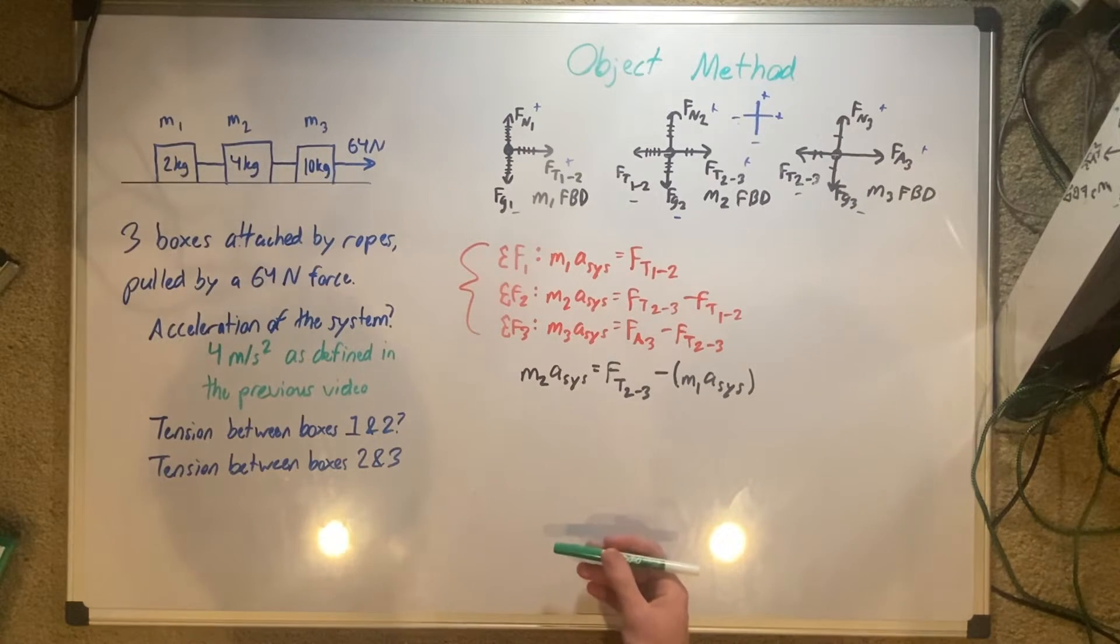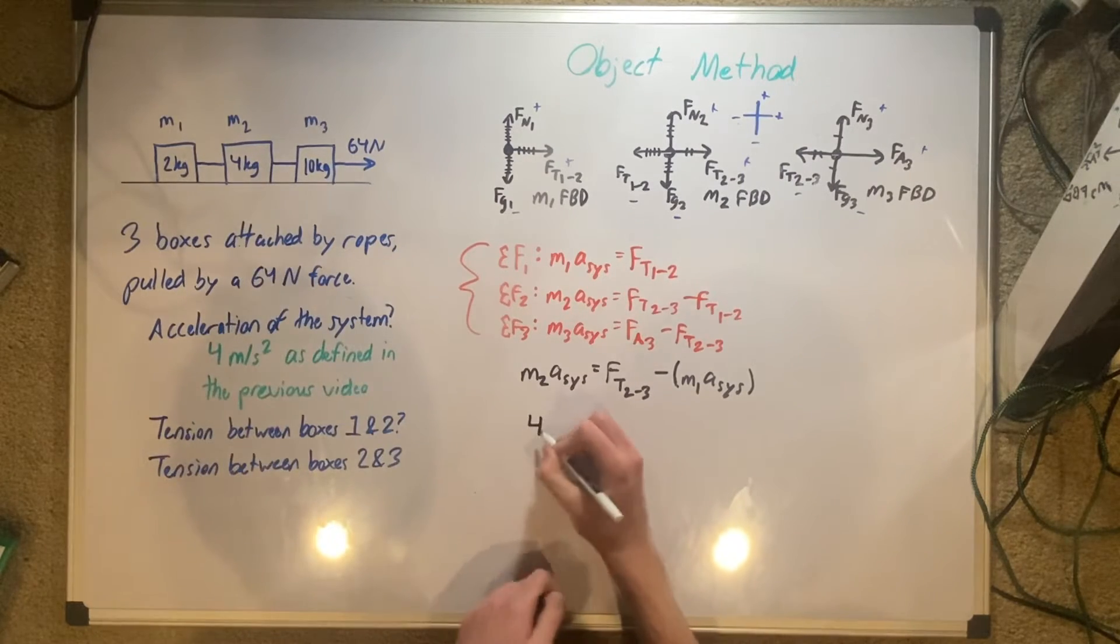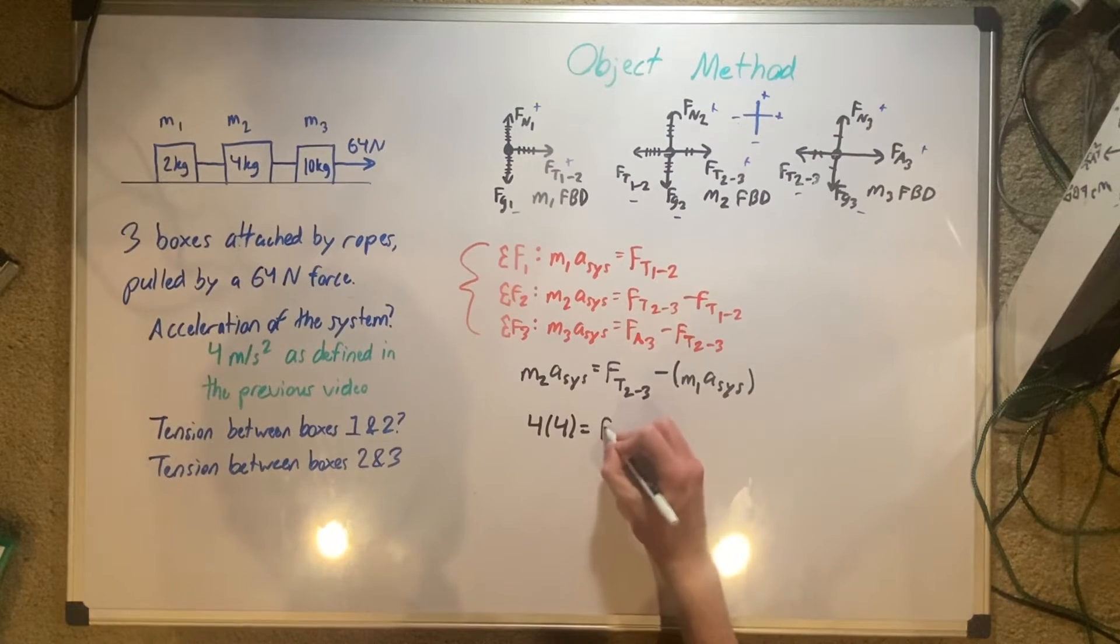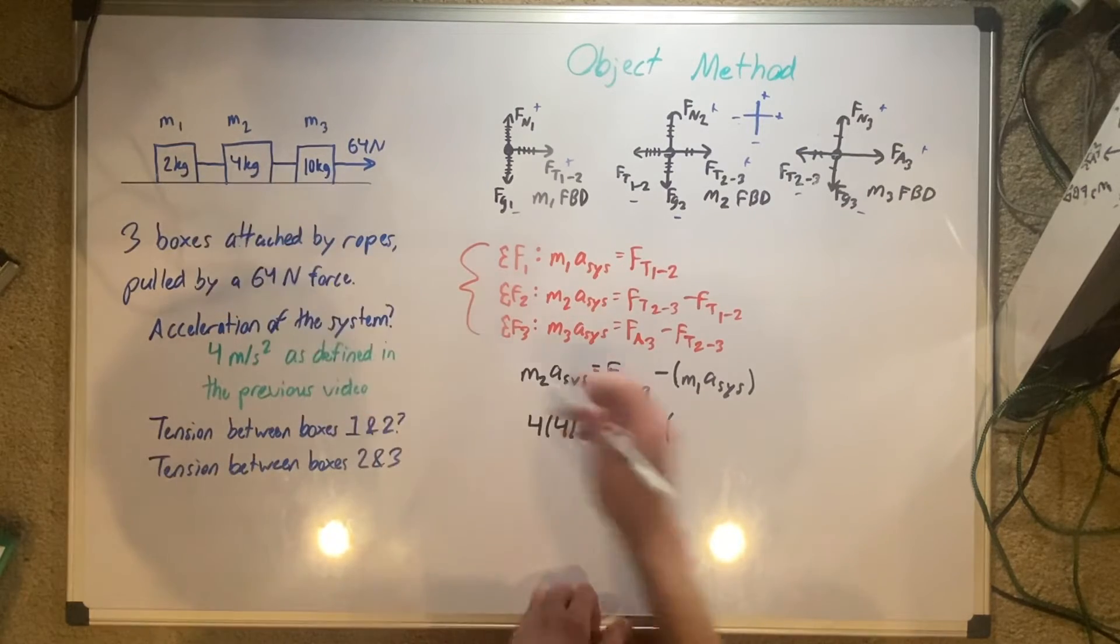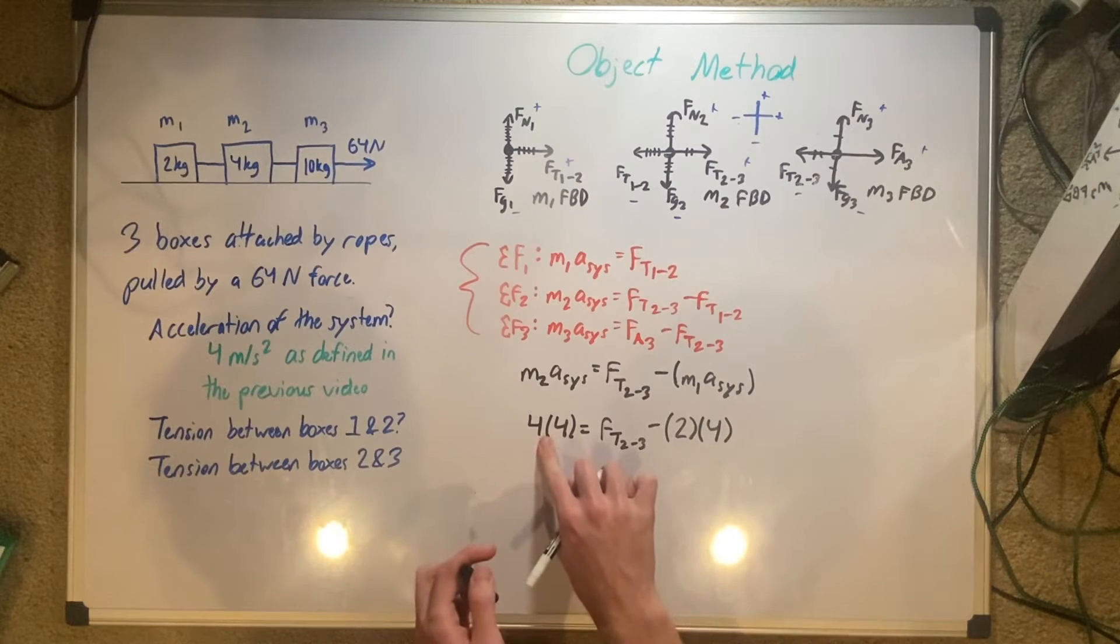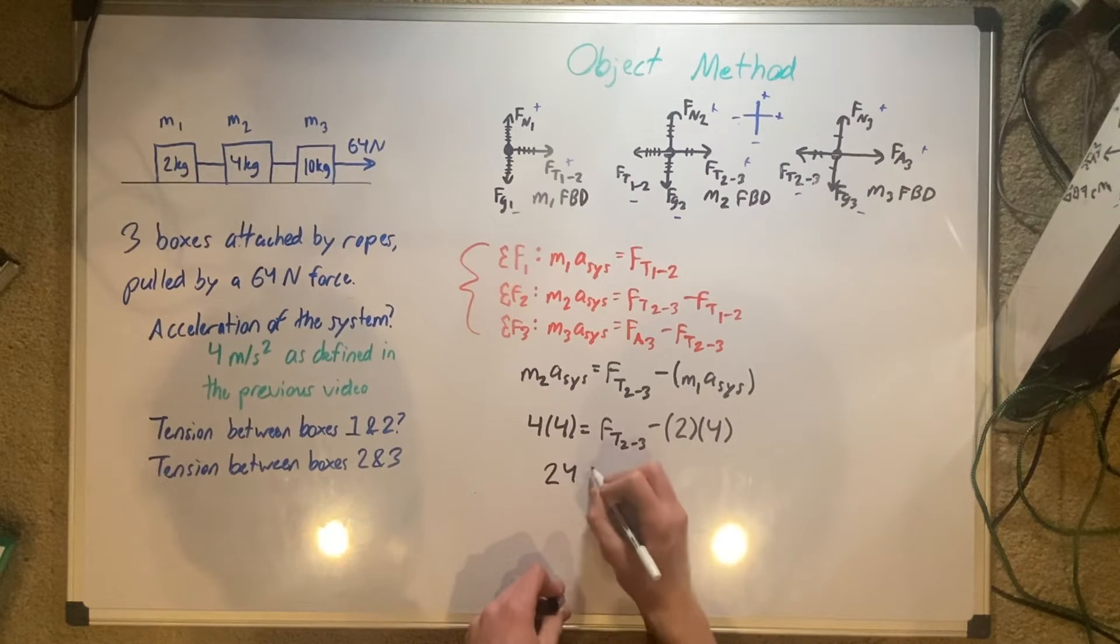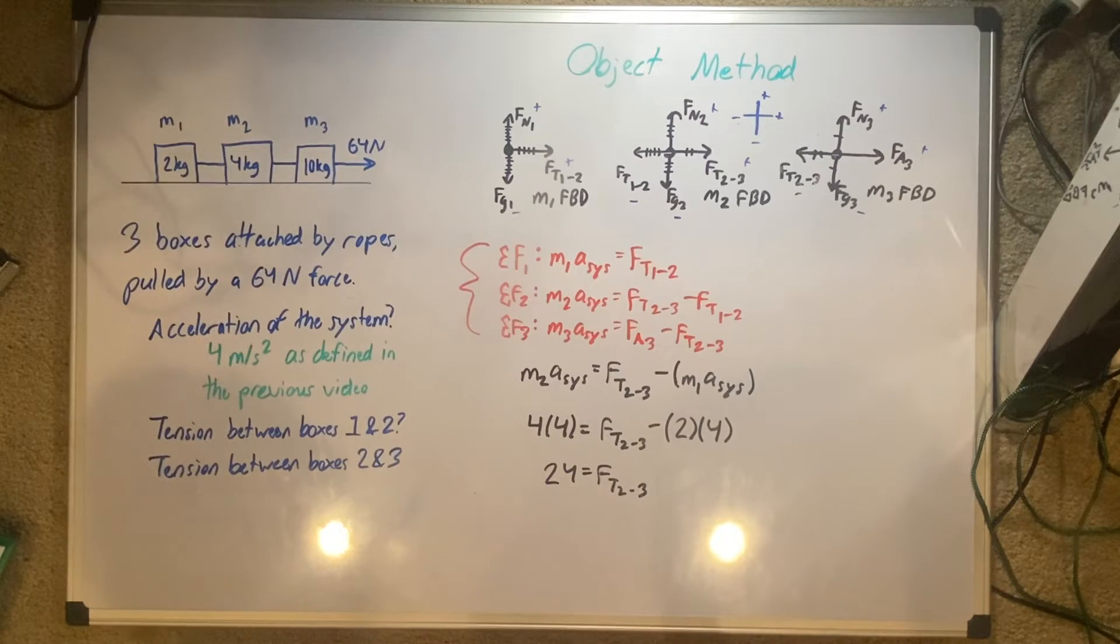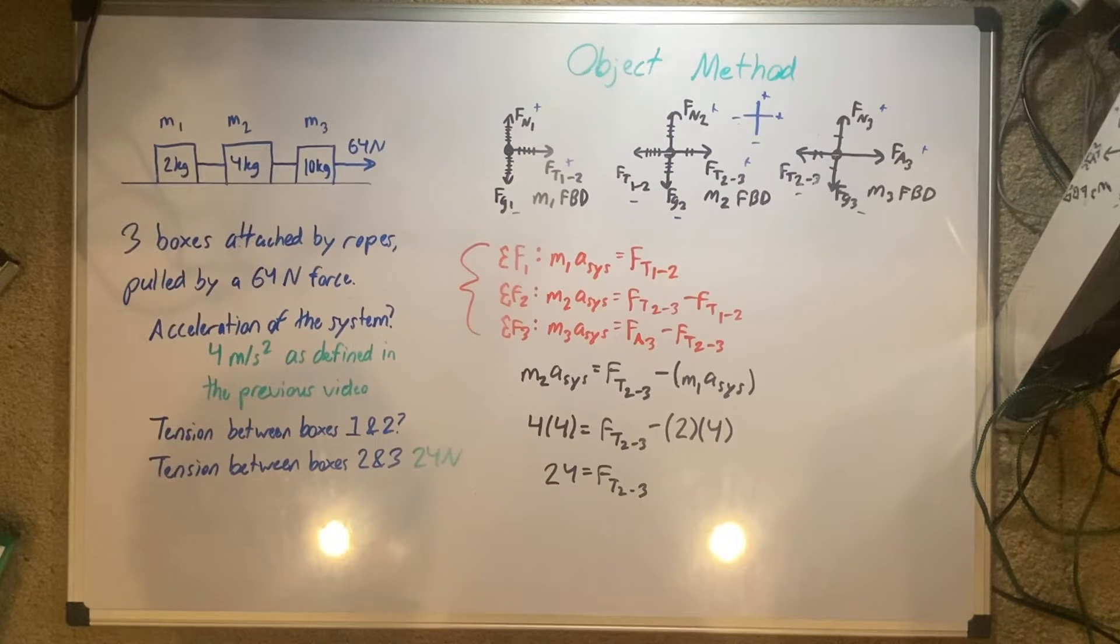What we can do from here is start to solve. Our M2 is 4, our acceleration is 4, equals Ft2 minus M1 is 2, acceleration is 4. This is 8. 8 all adds over to here. This is 16. 16 plus 8 is 24. Our tension between 2 and 3 is 24 newtons. That's how that one works.